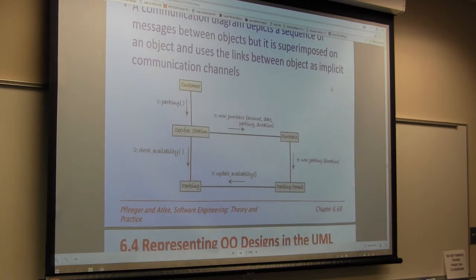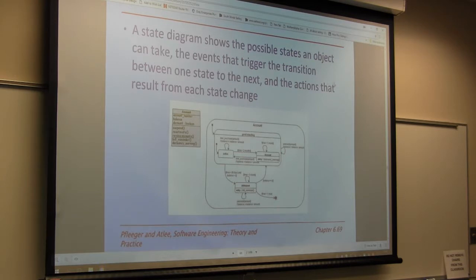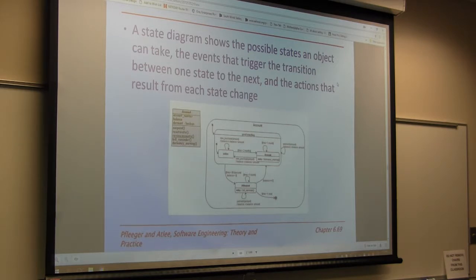Here's how parking might work. This talks about the different states an object can take — this is where we were talking about polymorphism: a particular object that can perform more than one function depending on what we feed it in the interface. We can feed it different variables and it does different things. We could have one module that does all the billing, whether it be parking service or gasoline.